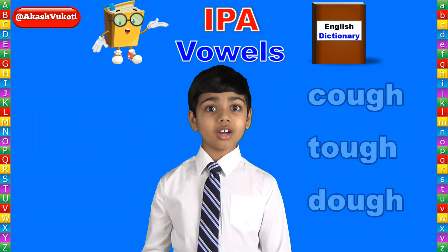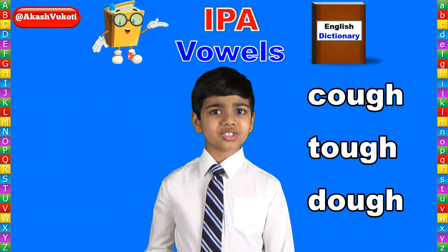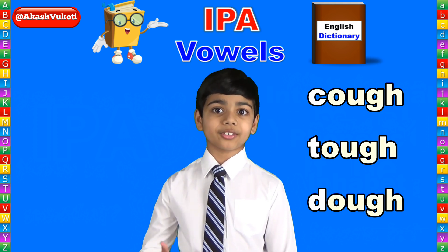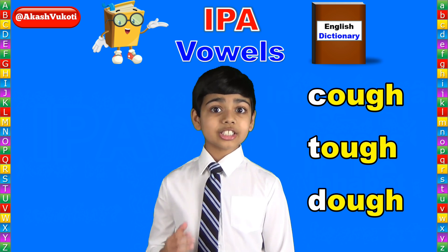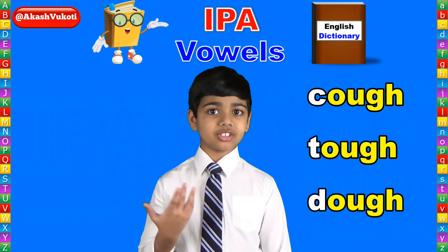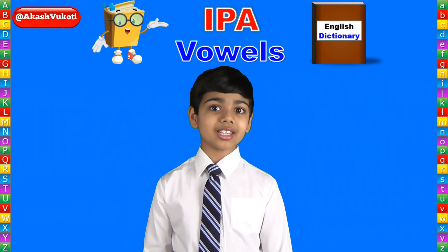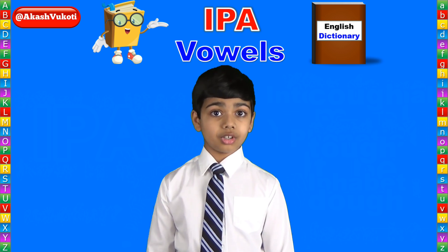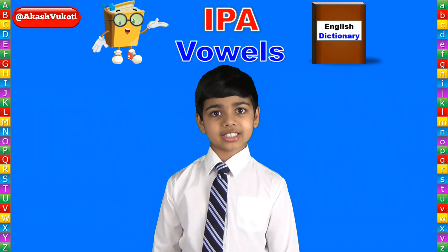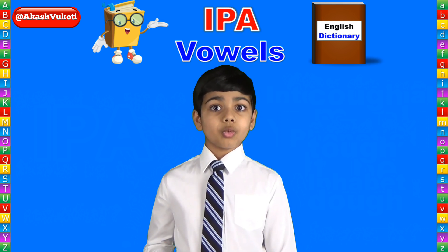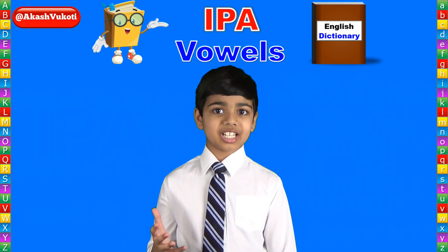For example, cough, tough, and dough. Although these three words have the same four-letter ending O-U-G-H, it's pronounced differently in each of these words. And this is why we have IPA — to represent the sound of words. In IPA, every sound has a unique symbol, compared to English where one letter can make various sounds.